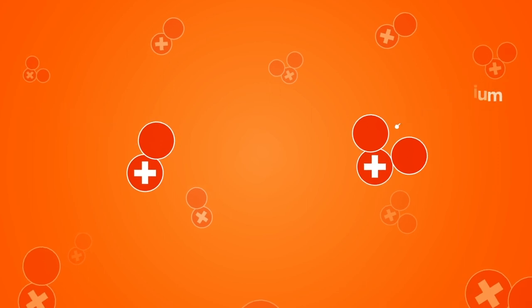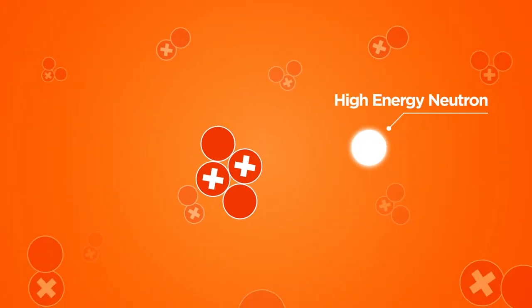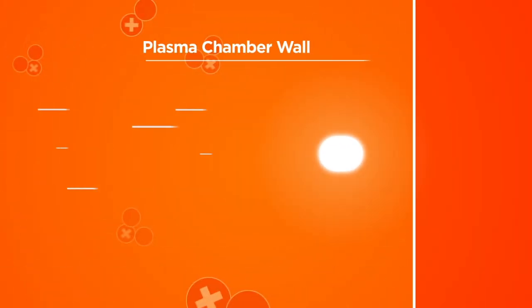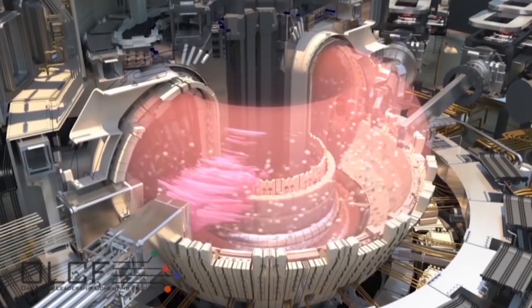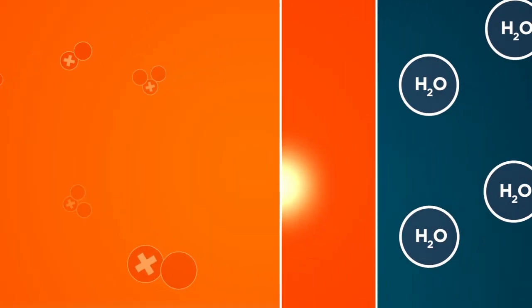When the plasma particles fuse, they release high-energy neutrons, which are absorbed by the surrounding chamber walls, generating heat. MEFI physicists at ITER are addressing the concern of water leaks from the tokamak's surrounding cooling system.